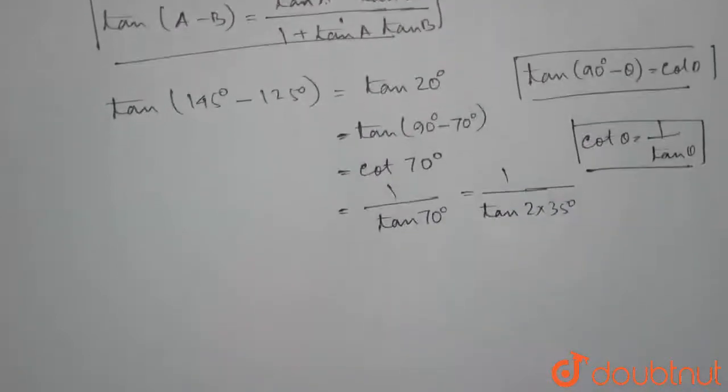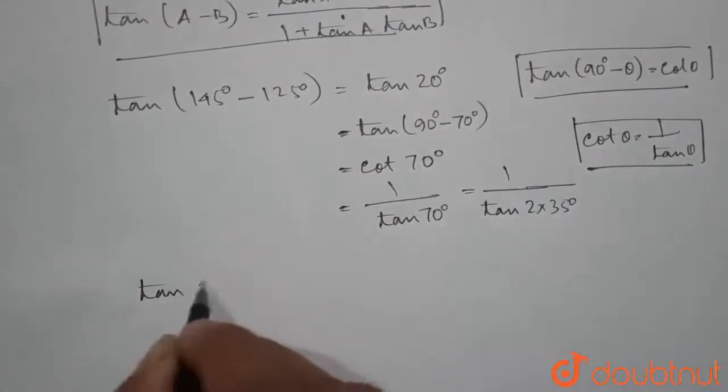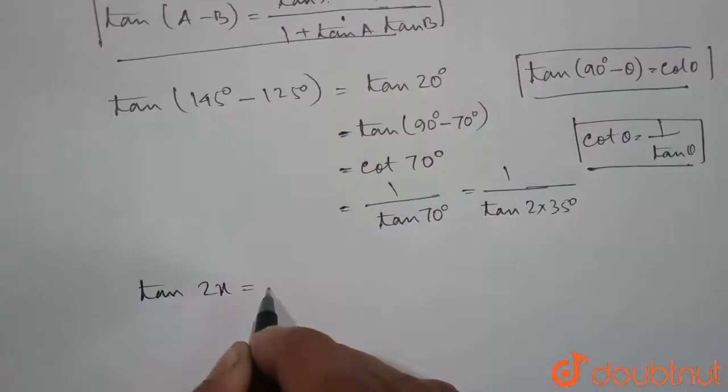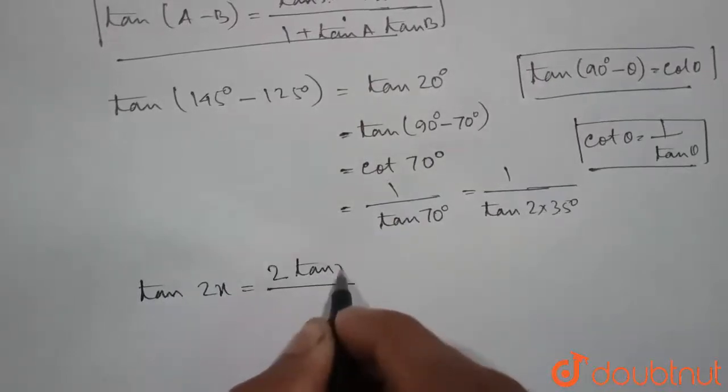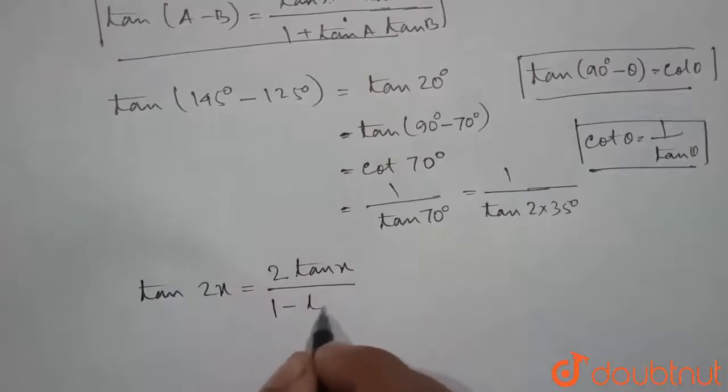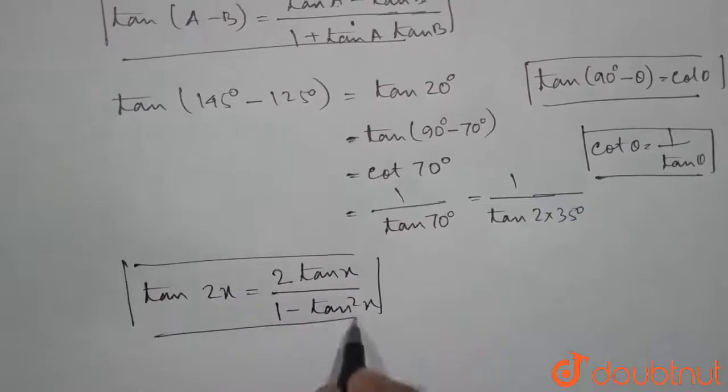Before solving further, let us write another formula. We know that tan of 2x is equal to 2 times tan x, divided by 1 minus tan squared x. So we know this formula.